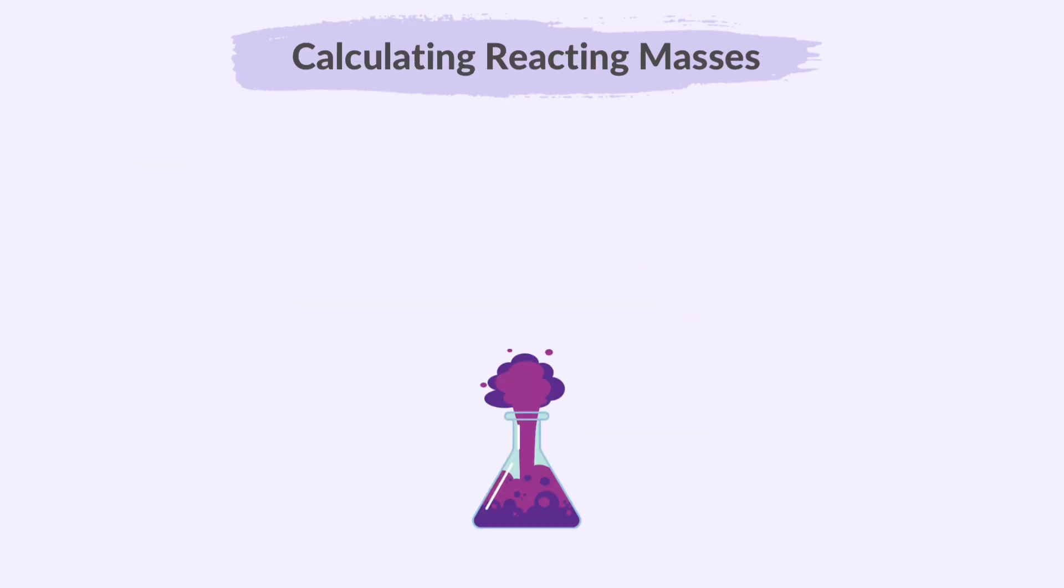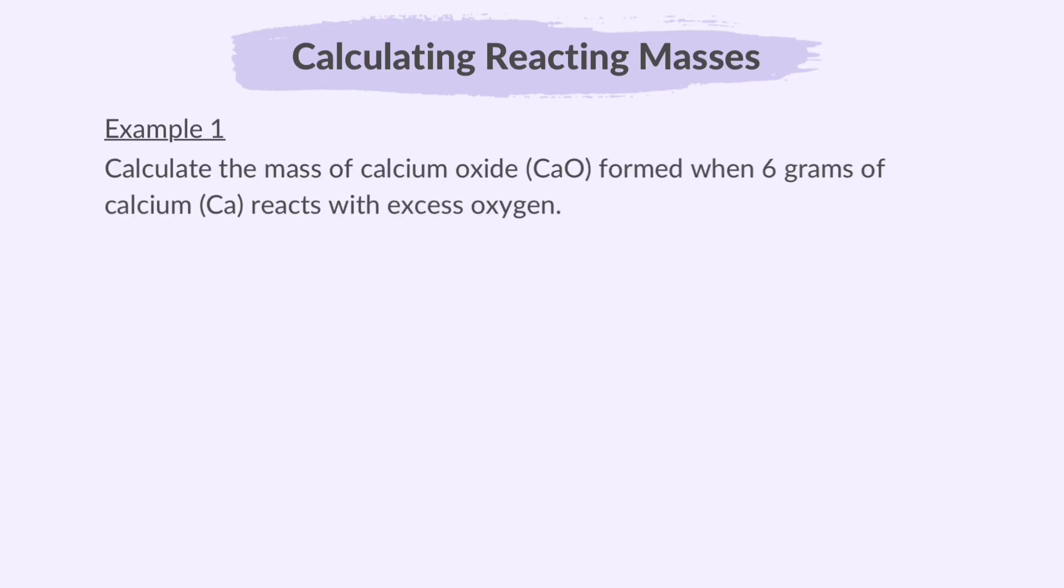Moving on to calculating reacting masses. Here, we determine the masses of reactants consumed and products formed in a chemical reaction. Example 1: Calculate the mass of calcium oxide, CaO, formed when 6 grams of calcium reacts with excess oxygen. This is the balanced equation.